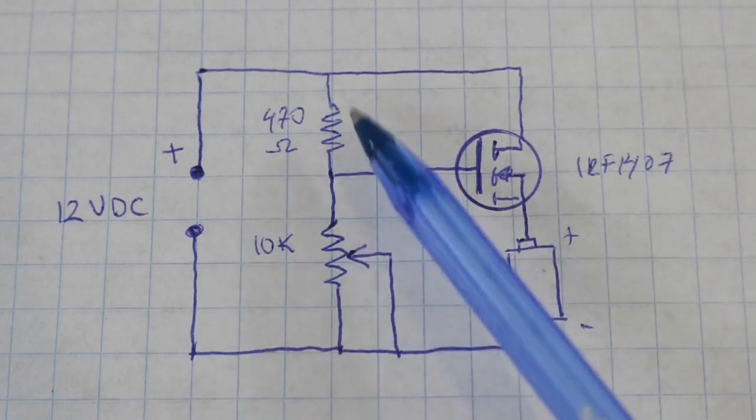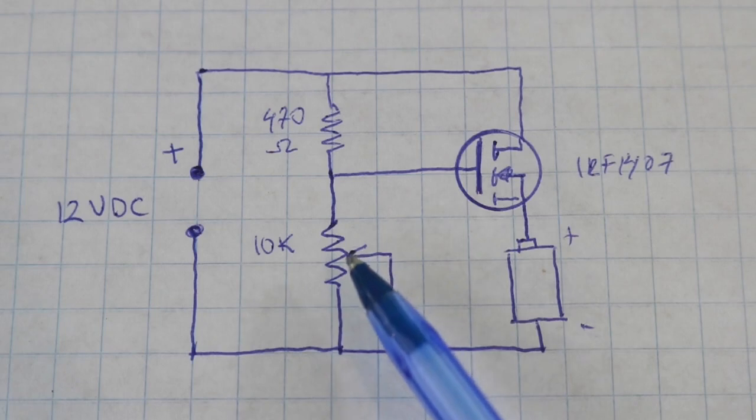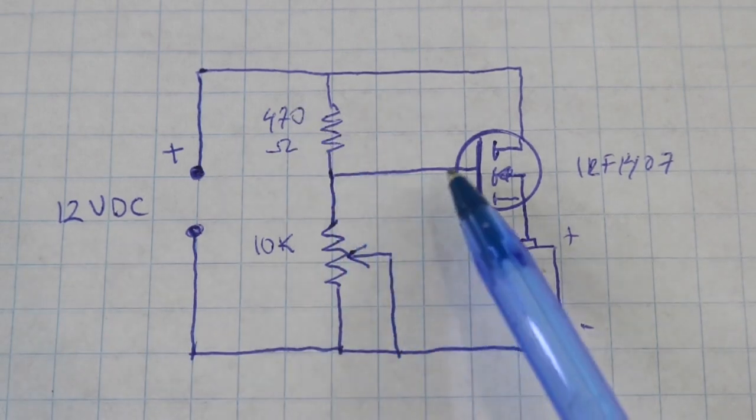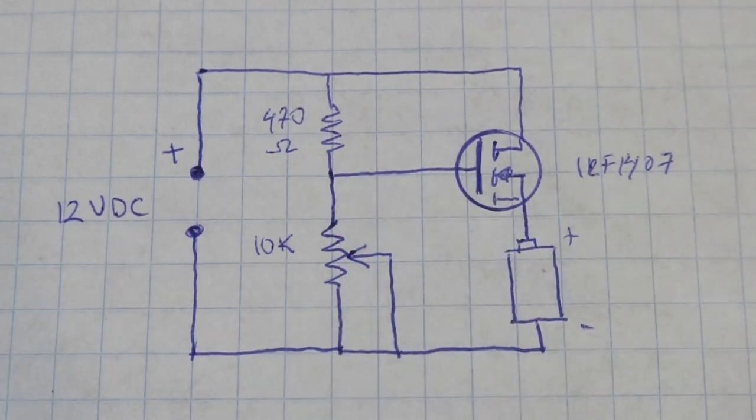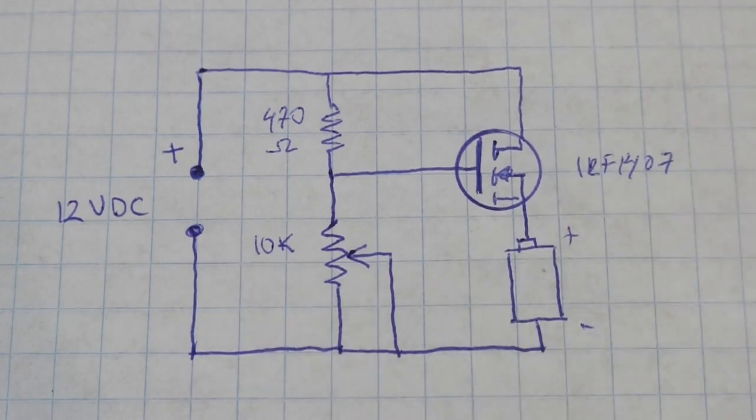The two resistances form a voltage divider, and by varying the potentiometer we can control the voltage to the gate of the MOSFET, thereby changing the voltage at the battery's terminals.